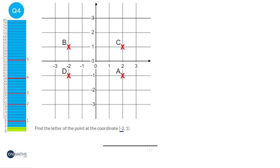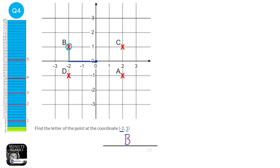This coordinate is telling us to go 2 to the left from the centre. We go right when it's positive and left when it's negative, so it's 2 to the left. And then it's telling us to go 1 up — it's up because it's positive. So we need to go 1 up and we get to the coordinate of B. So we just look at minus 2 on the x-axis and 1 on the y-axis, and that is where point B is.